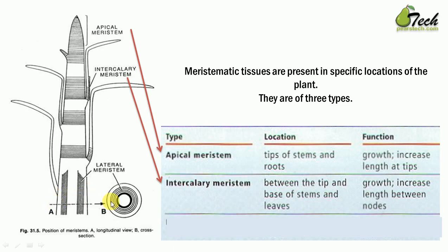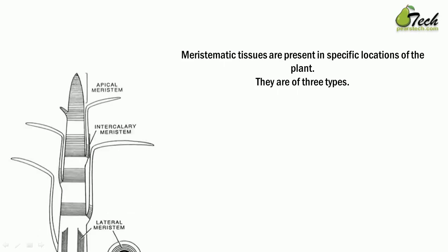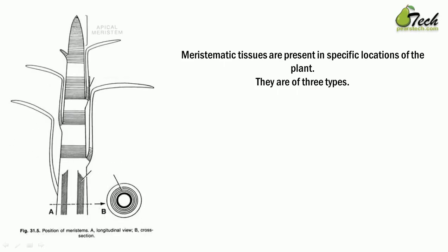The third type is lateral meristem. At the bottom part, the diameter increases — that is the job of lateral meristem, found at the sides of the stem. Growth is parallel to the stem, and this tissue is in charge of increasing the diameter of the plant.